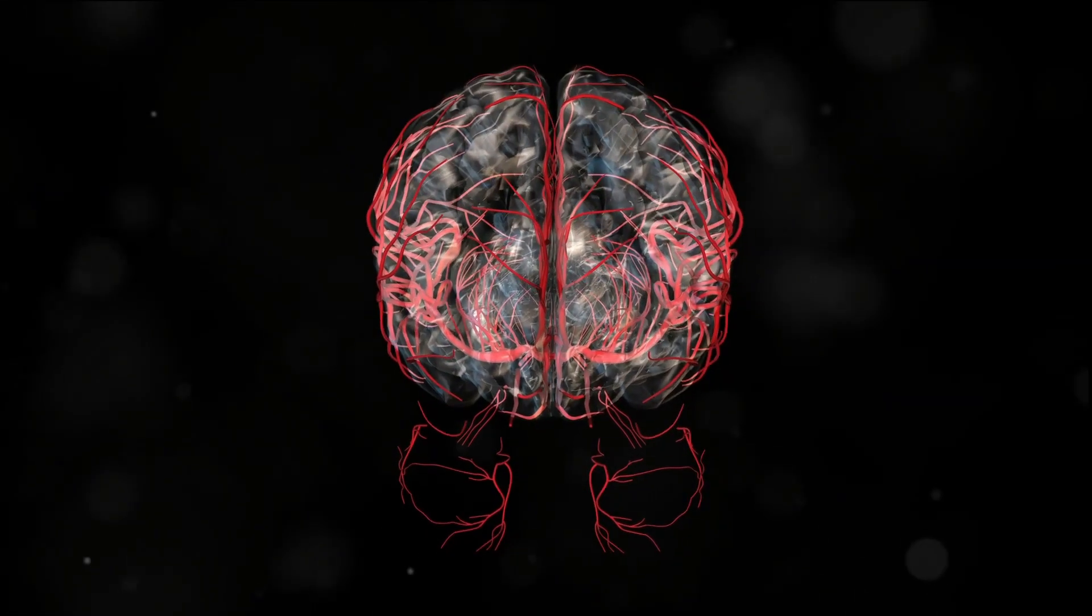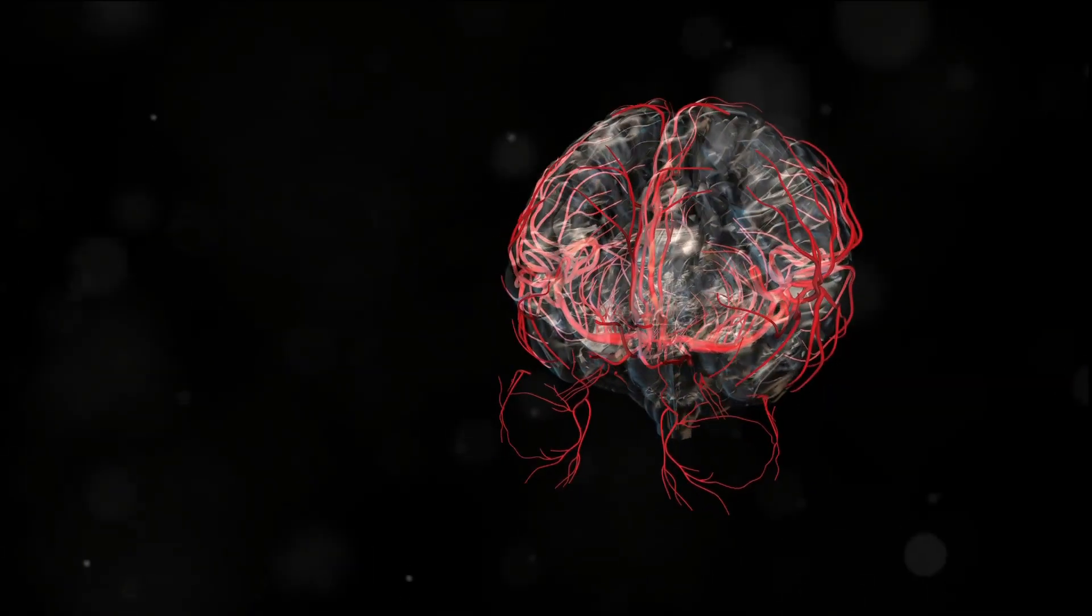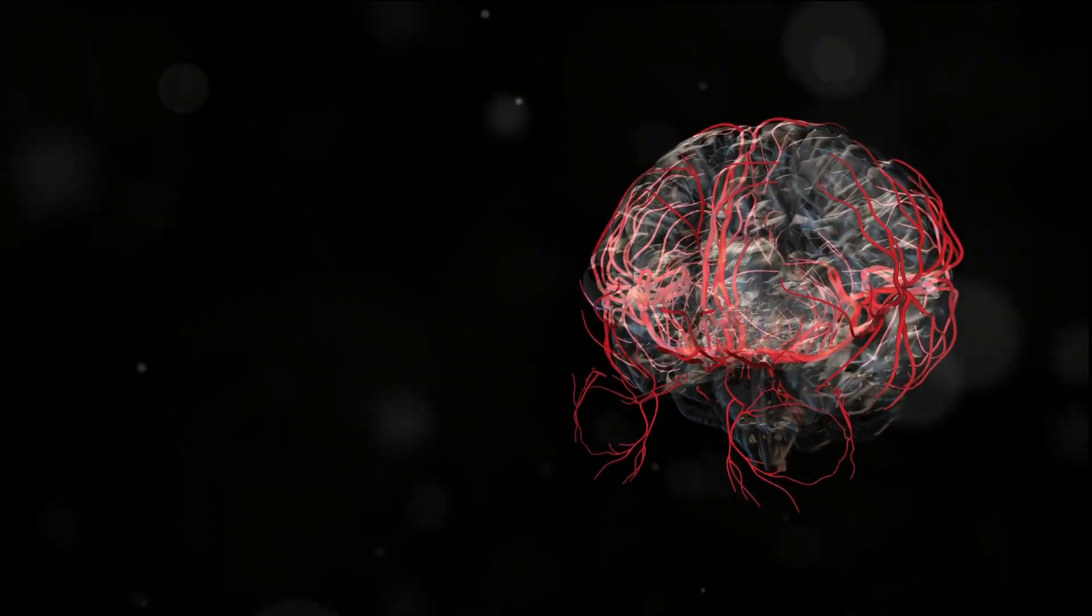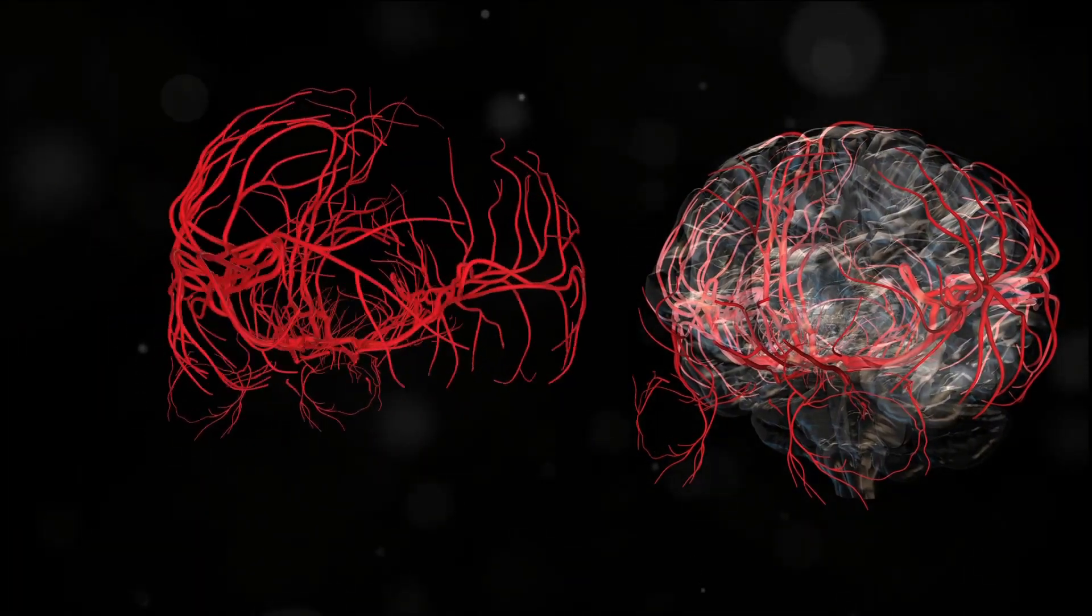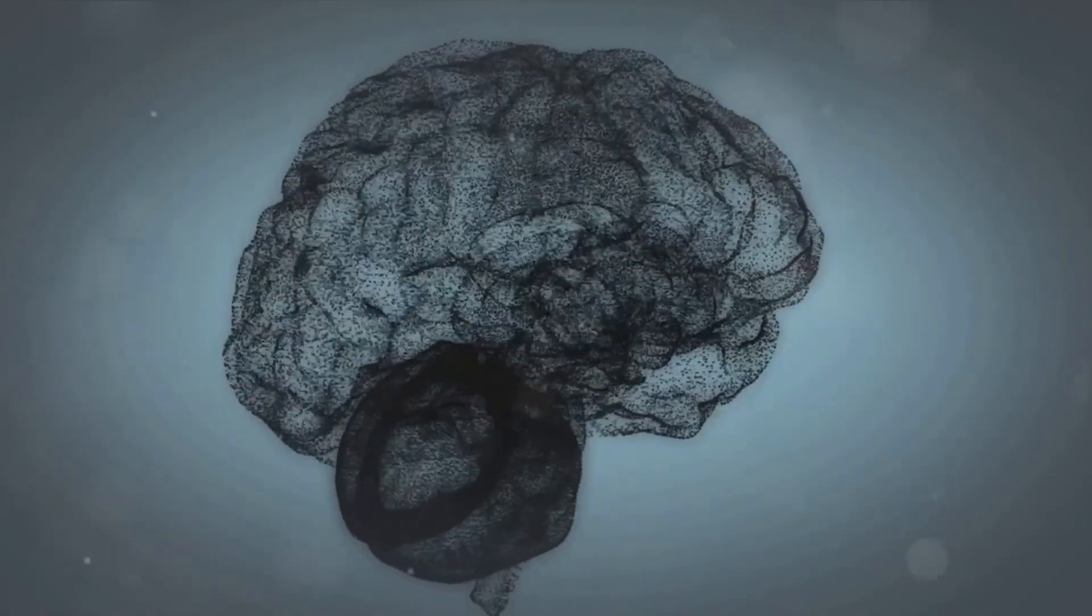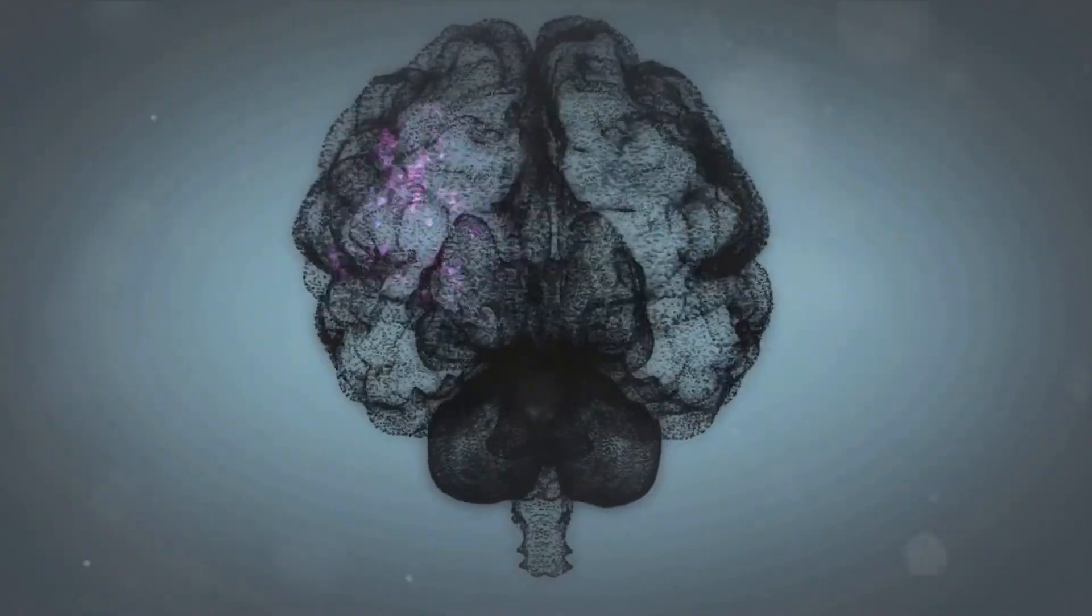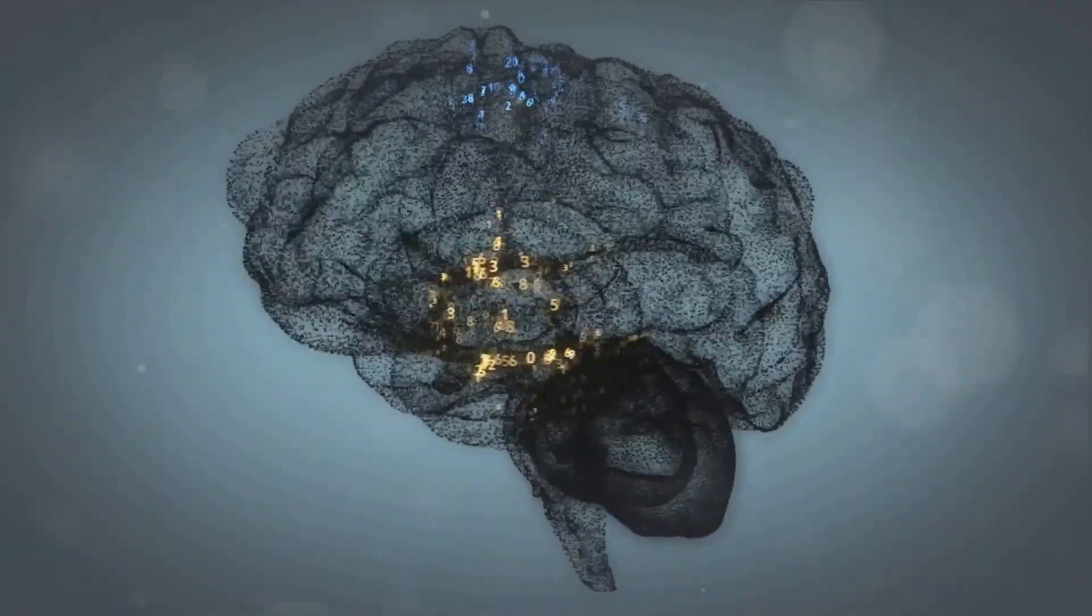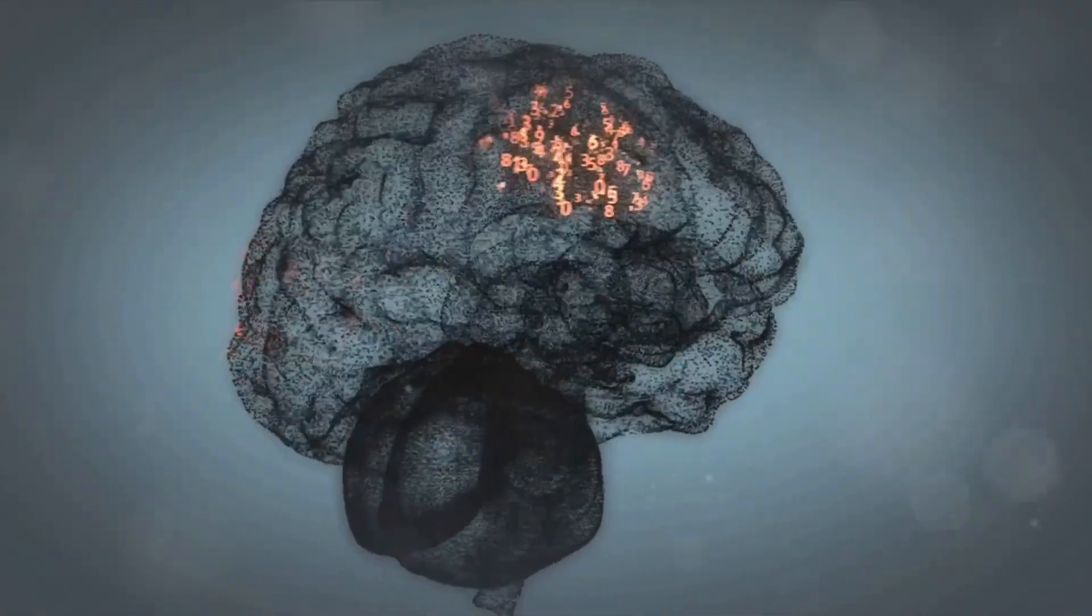Their second tool was 3D genome structure analysis. Picture a city map with its intricate network of streets and avenues. Now imagine this map in three dimensions, where each street is a strand of DNA and each intersection a cell. This 3D map allowed the researchers to visualize the physical organization of the genome within the brain cells, helping them further unravel the mysteries of the human brain.